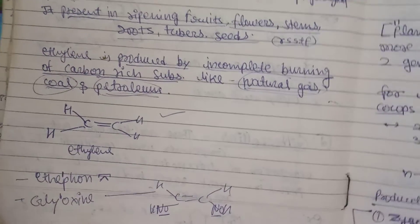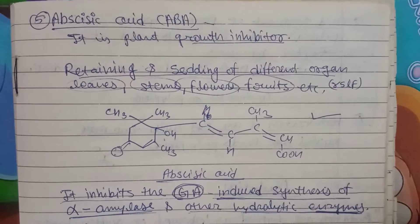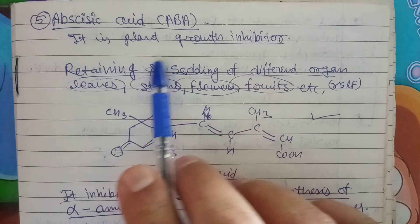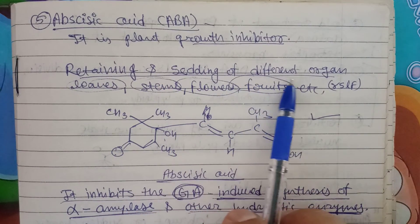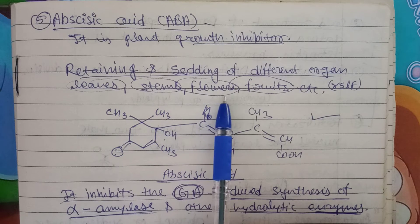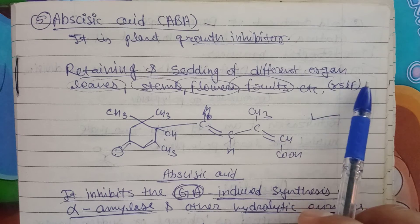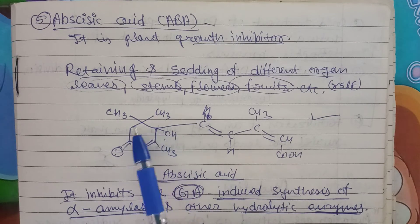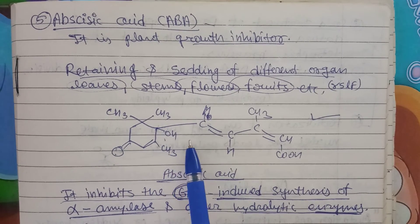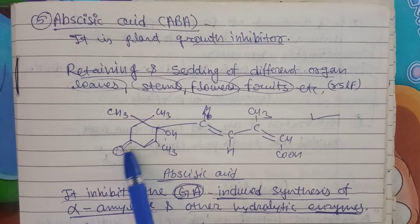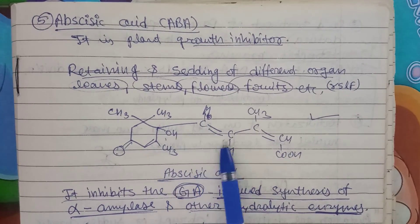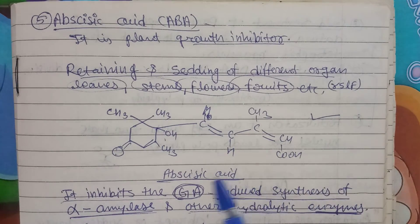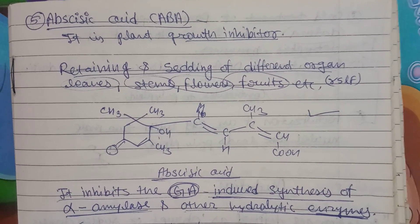The other examples you can mention here are ethephon and glyoxine — you can draw the same structure with modifications. Now coming to the fifth one: abscisic acid, also known as ABA. It is a plant growth inhibitor — not a regulator, it is an inhibitor — involved in retaining and shedding of different organs, for example leaves, stems, flowers, fruits. The structure shows one benzene ring with CHC, a ketonic group, and a chain CH=CH-COOH. Practicing drawing this structure will make for a good answer.